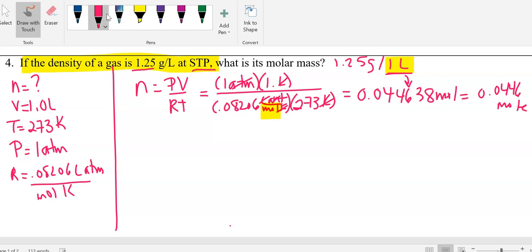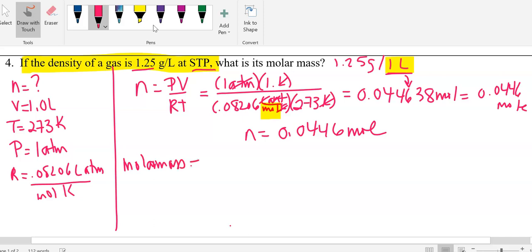Now we have to calculate molar mass. We just said that N is equal to 0.0446 moles. In order to get to molar mass, molar mass is grams per mole.